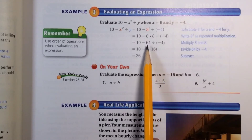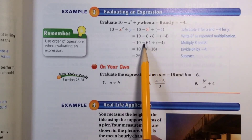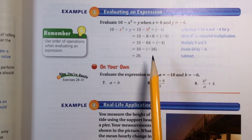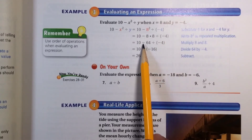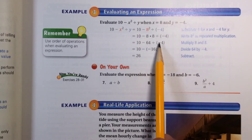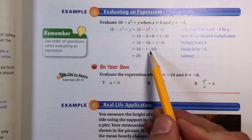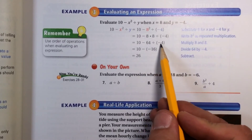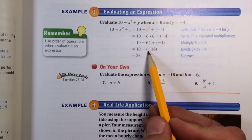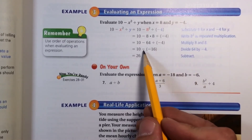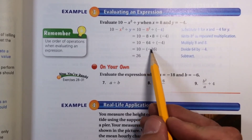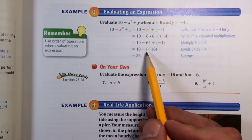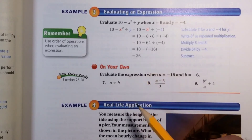So I get the division taken care of first: 64 divided by negative 4 — either way, watching the signs — gives us negative 16. Now I have 10 minus negative 16, which of course becomes a big plus: 10 plus 16 is 26.